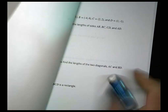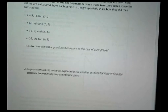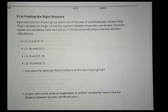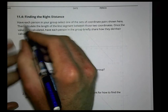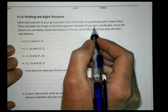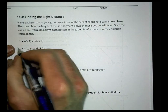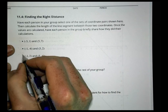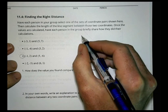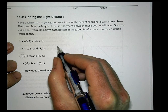Now let's look at the next activity. We're going to 11.4, 'Find the Right Distance.' Have each person in your group select one of the coordinate pairs, calculate the length of the line segment between them, then share with the group. I'm going to go ahead and do the third one. I'll draw a coordinate plane to help see it.